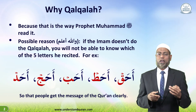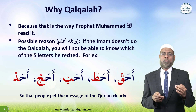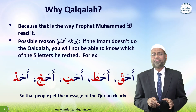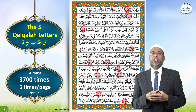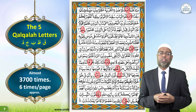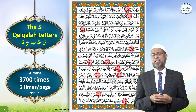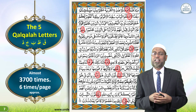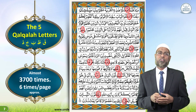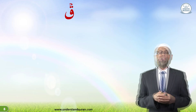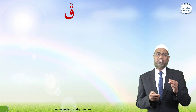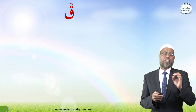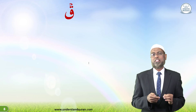Qalqala occurs in the Quran almost three thousand seven hundred times, or approximately six times per page. Let's take Qaf sakina as an example. Remember, Qalqala occurs only when there is a sukun on these five letters.